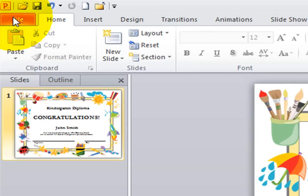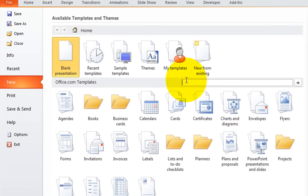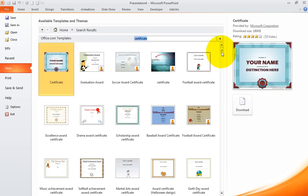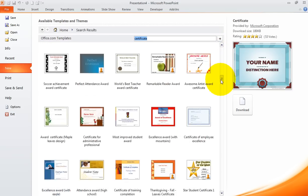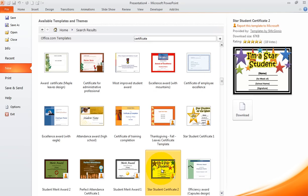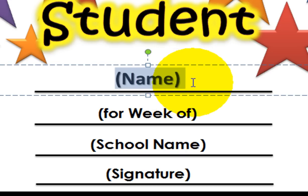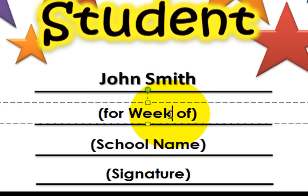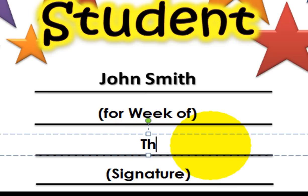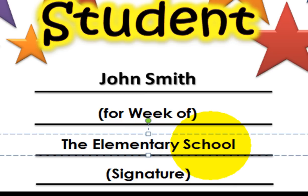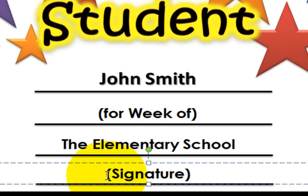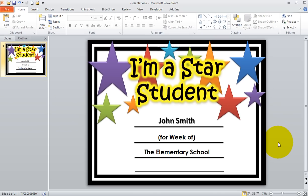Let's go to the third one. Go to File, New, type 'certificate' and click the search box. Scroll down and there it is right there. Click on it, then Download. Once again, we're looking for that cursor to turn into the eye. Click right here and type the name of the student. Click right here and type the week. Click right here and type the name of your school. Click right here, then click and drag the mouse and push the spacebar so you can sign it. Okay, looks pretty good.